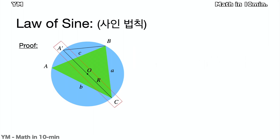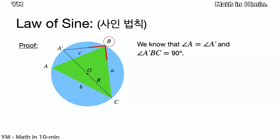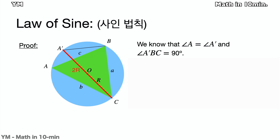To prove this, I will extend the line CO as pictured. Then let the point which meets the line and the circle be A'. Let me also draw a line passing A' and B. Then we know that angle A is equal to angle A', and angle A'BC is a right angle. If you do not understand, check my previous video which is lecture 2. So the triangle A'BC is a right triangle, and its hypotenuse is 2R.